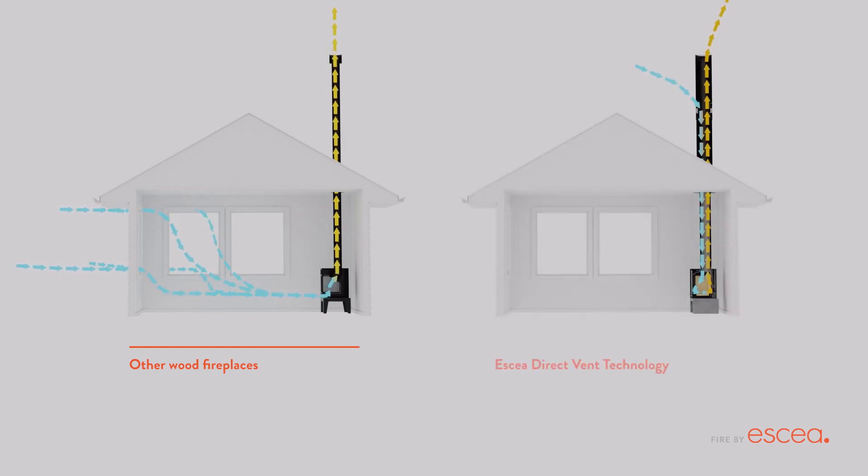With Escea direct vent technology, no room air is used to fuel the fire, eliminating drafts and maintaining indoor air quality.